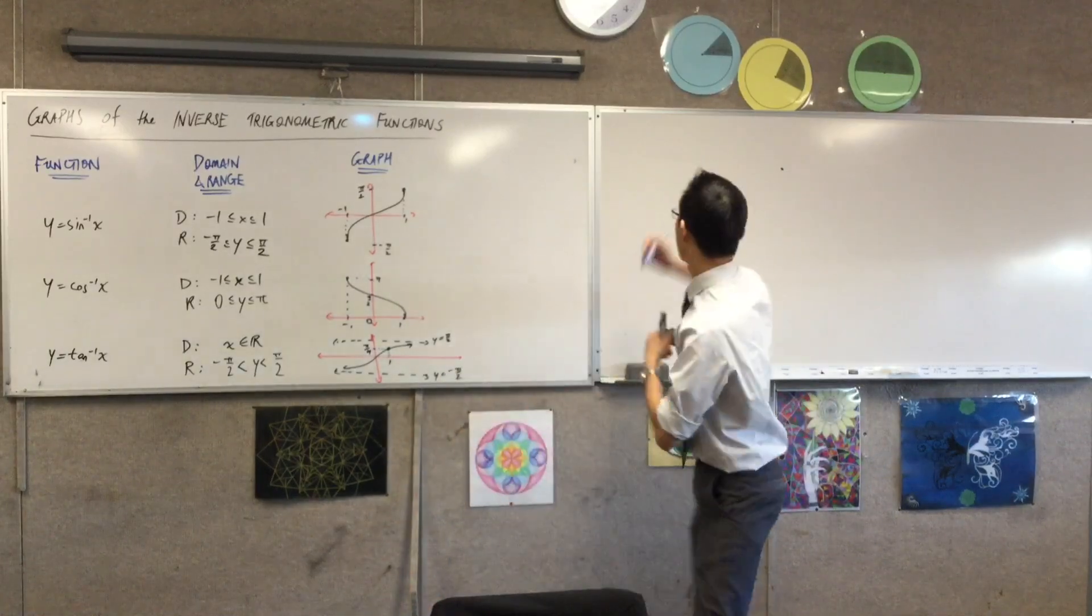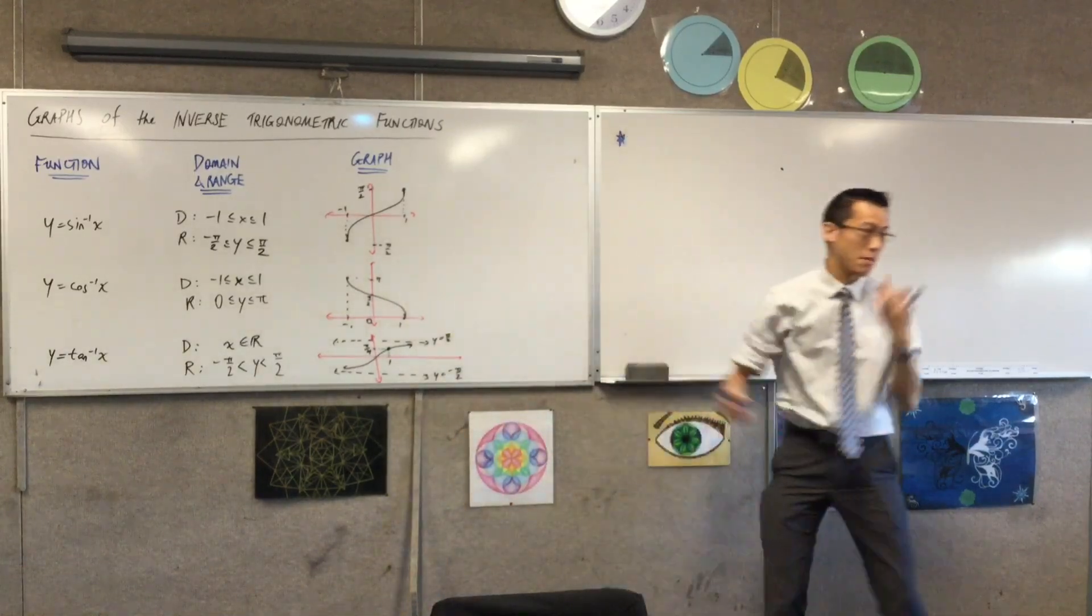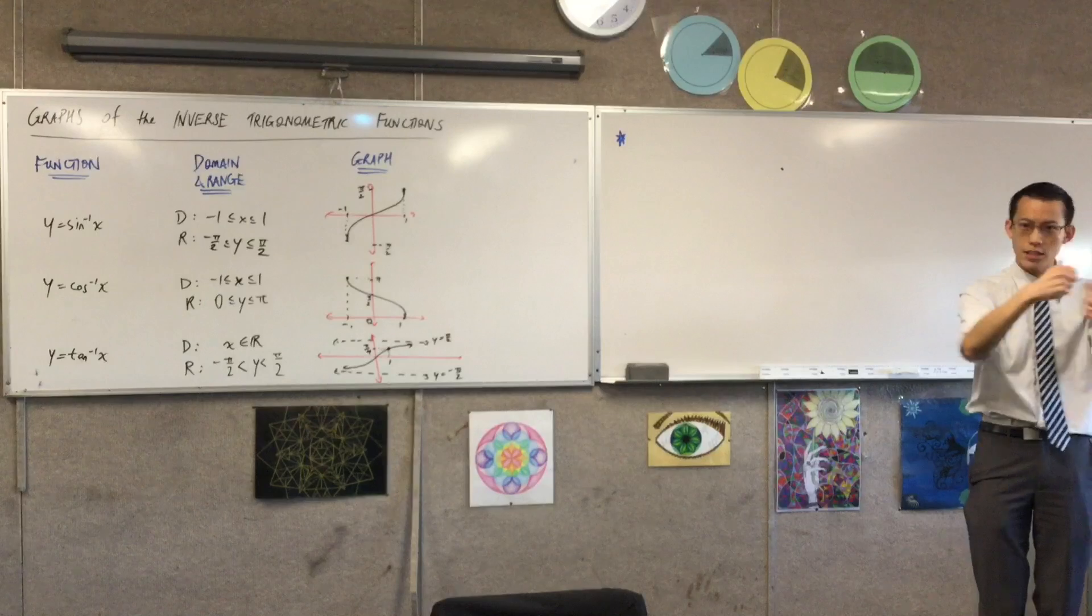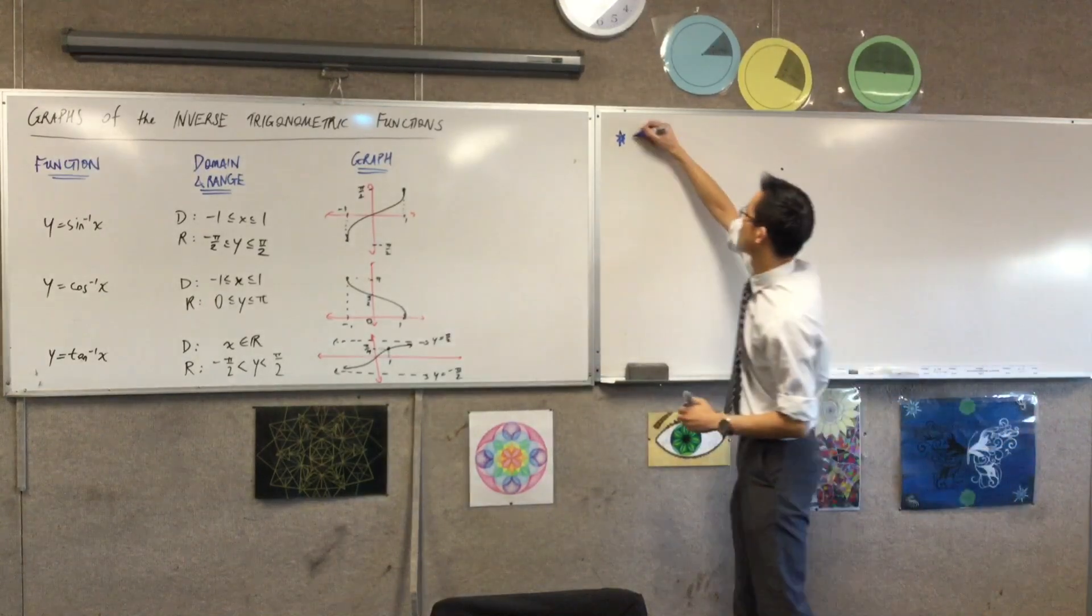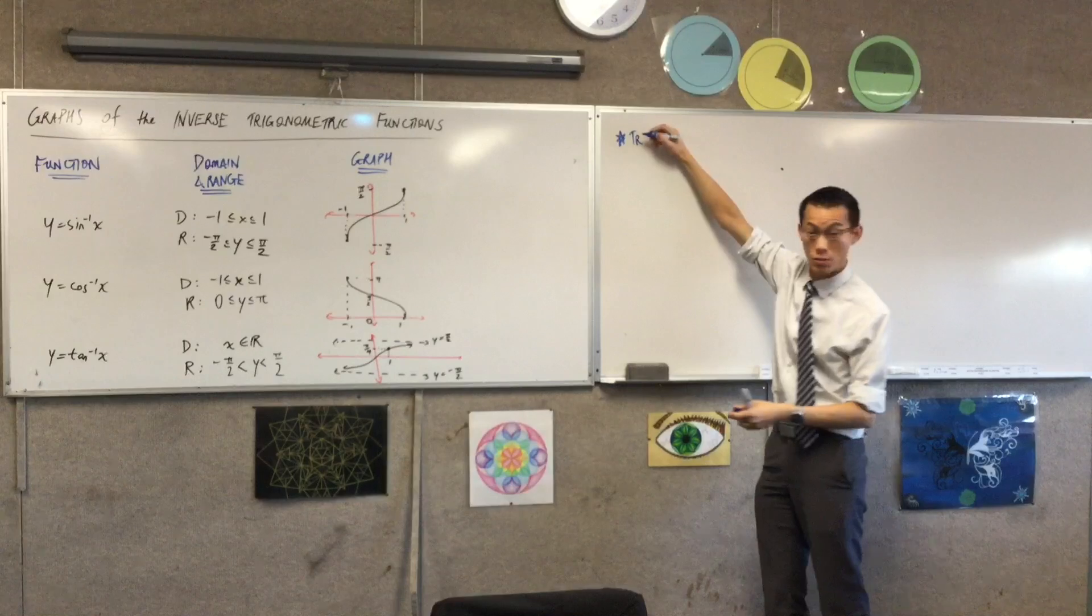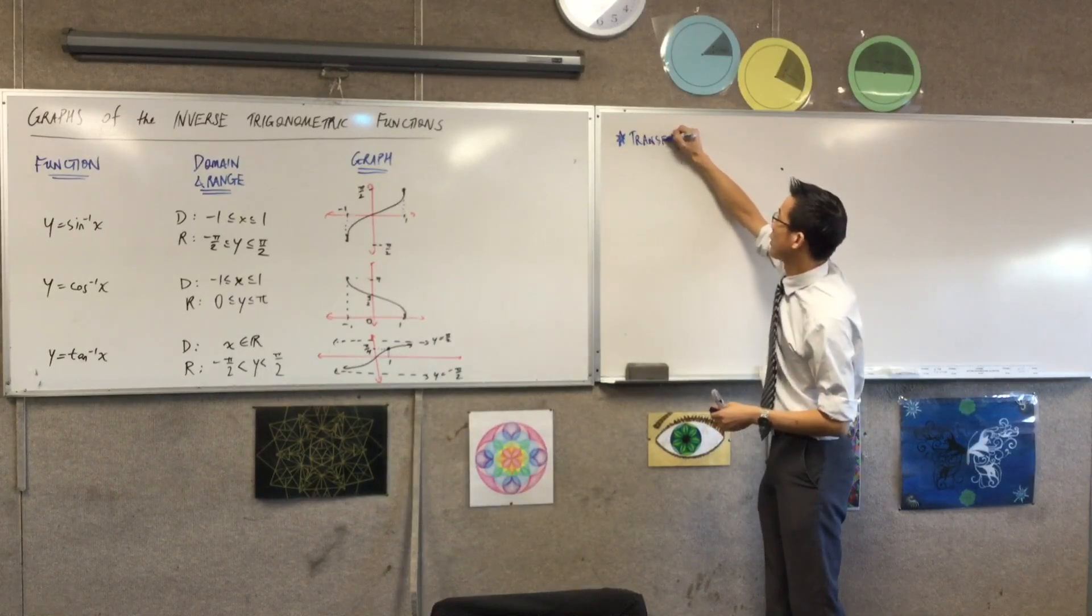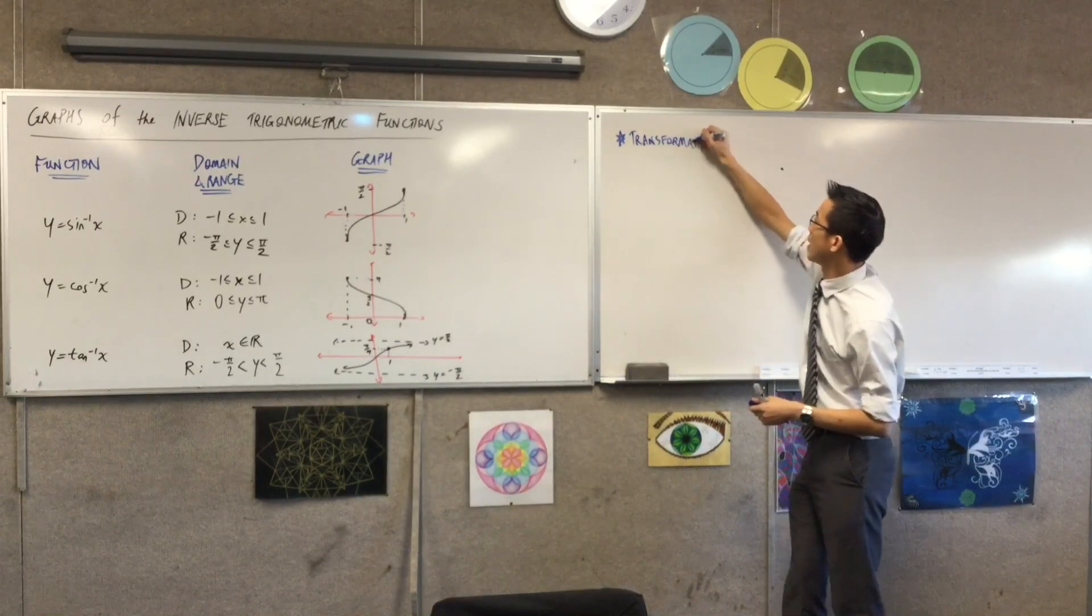We're going to look at transformations. By transformations we mean if we scale things, if we stretch them out, or if we shift things around, if we translate. Those are the two important kinds of transformations we're going to look at, and reflections as well, that kind of comes as part of it.